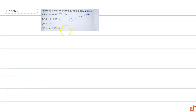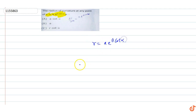In this question we have to find the radius of curvature at any point of r equals to a·e raised to power θ·cot α. So r equals to a into e raised to power θ into cot α. The radius of curvature formula — an important form — is: r² plus r_θ whole square.